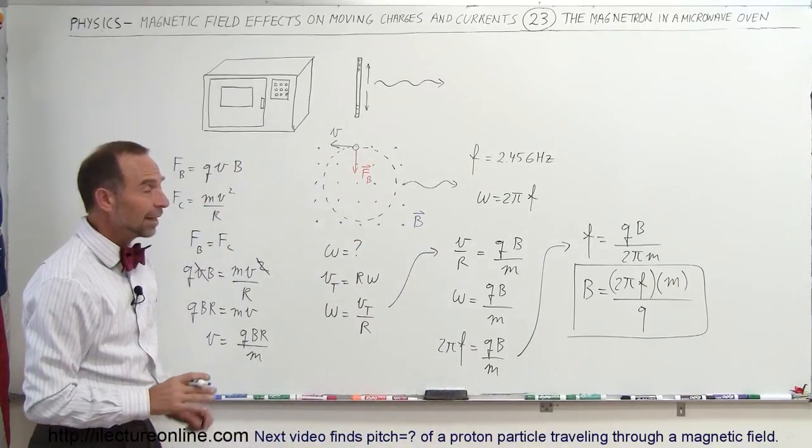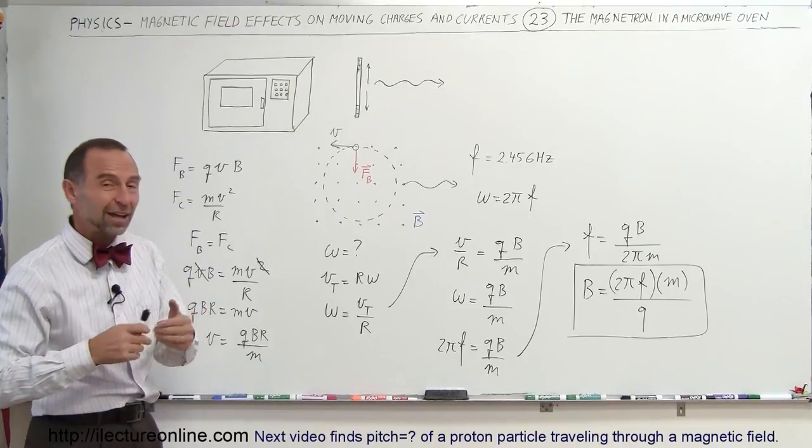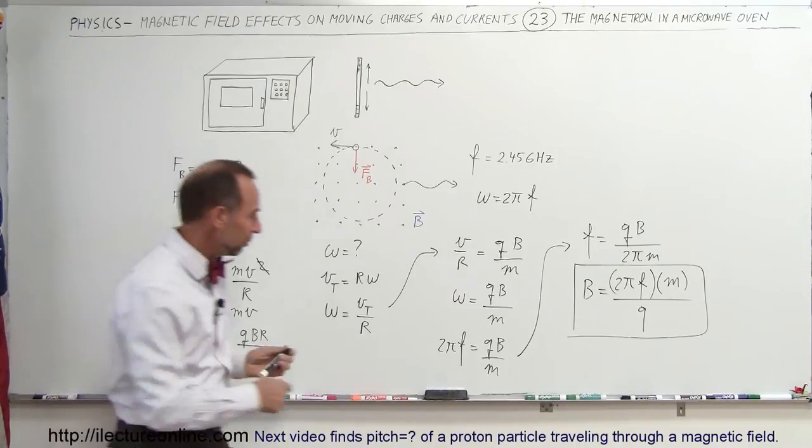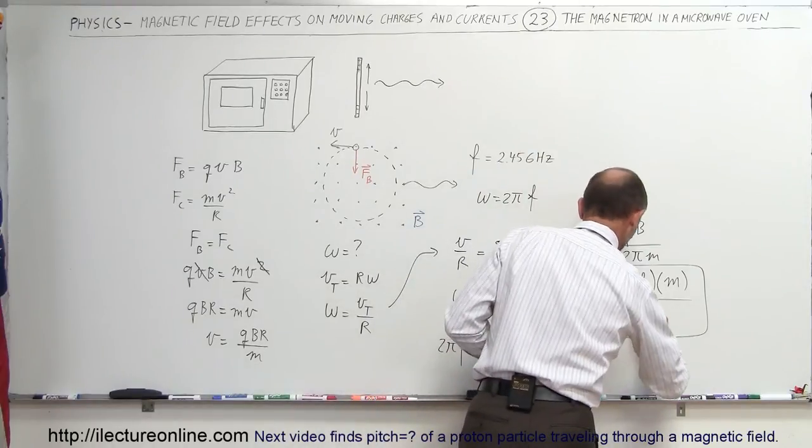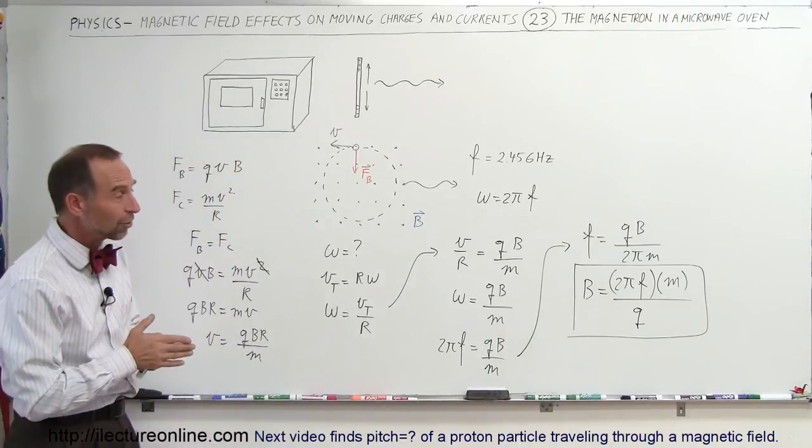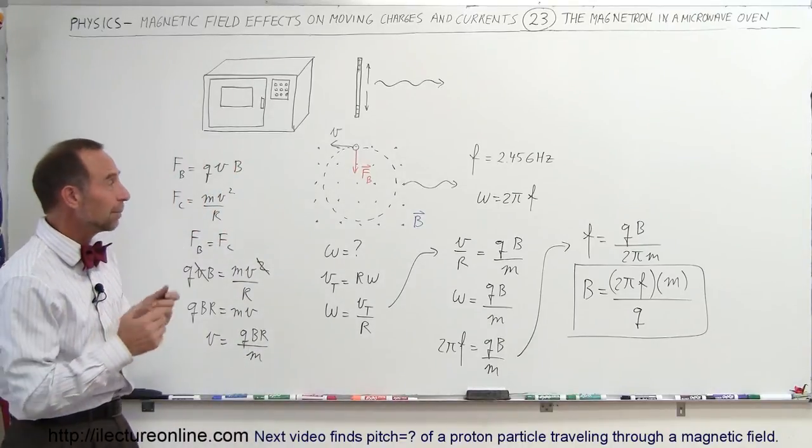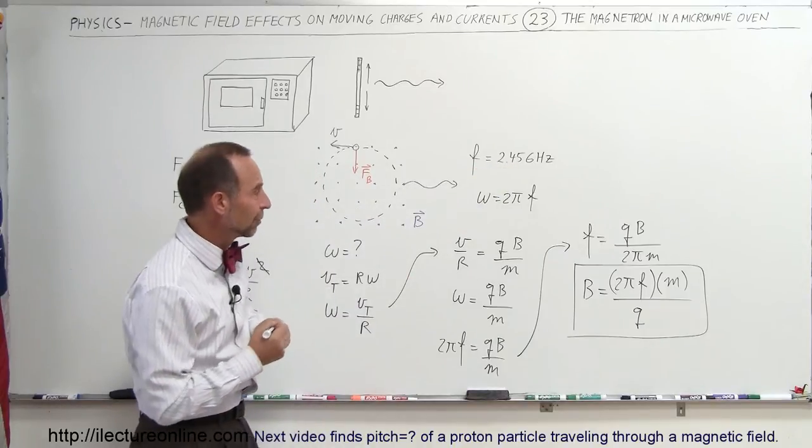And this is how we determine the magnetic field strength in the microwave oven, irregardless of the size of the oven, irregardless of the size of the radius. And so now let's plug in some numbers to see what the strength of magnetic field would be in a microwave to produce 2.45 GHz waves.